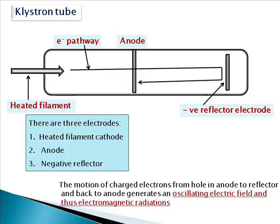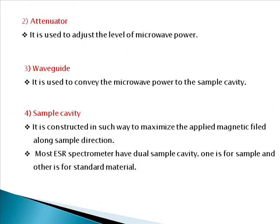The second component is the attenuator, whose role is to adjust the level of microwave power. The third component is the waveguide, which is a hollow rectangular brass tube of 0.9 × 0.4 inch size. It is used to convey the microwave radiations or power to the sample cavity containing the paramagnetic substances.